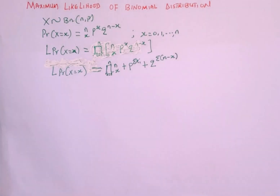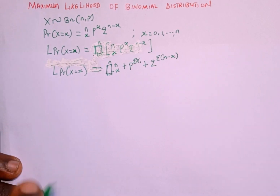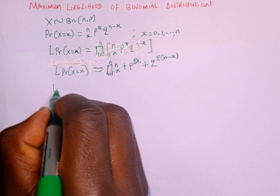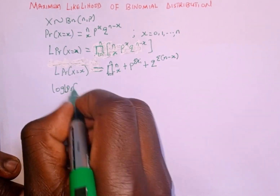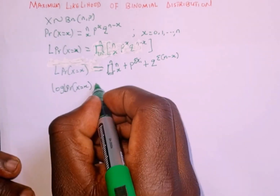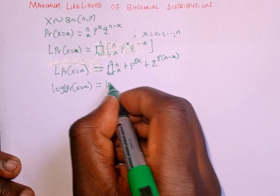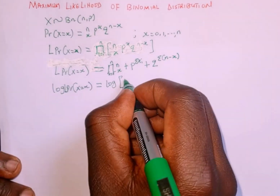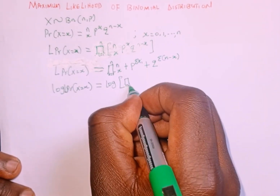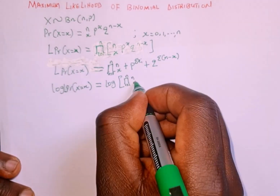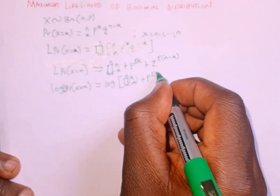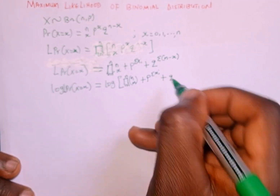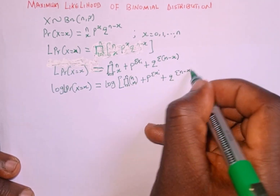The next thing is to take the logarithm of both sides. So we take the log of the likelihood of P(X = x), which is equal to the log of the product from i = 1 to n of n-combination-x, plus the log of p raised to the power of summation of x_i, plus the log of q raised to the power of summation of n minus x.